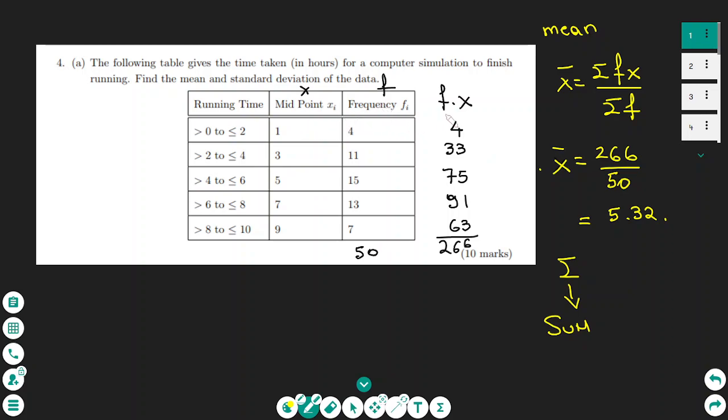So I found F times X: that is 4, 33, 75, 91, 63, and the total sigma FX is the sum of all these numbers, which is 266.